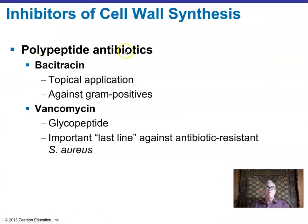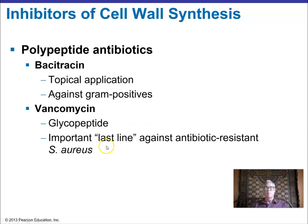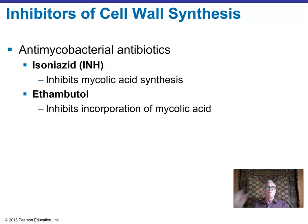Bacitracin is a polypeptide antibiotic used largely as a topical application with polymyxin B against gram-positive bacteria, basically in ointments. Vancomycin is a super important antibiotic for various antibiotic-resistant bacteria — methicillin-resistant Staphylococcus aureus (MRSA) and Enterococcus, which is a major problem in indwelling catheters and biofilm formation disease.